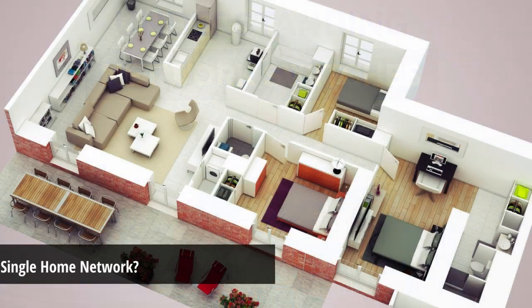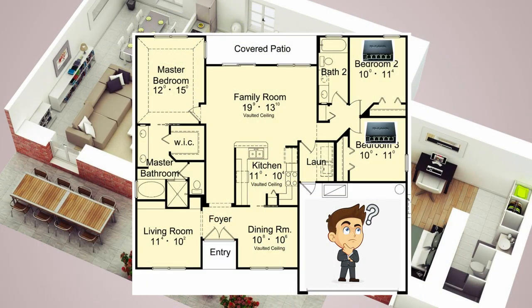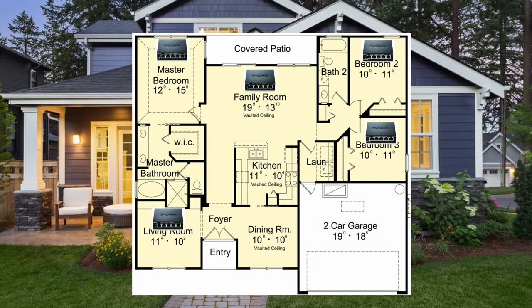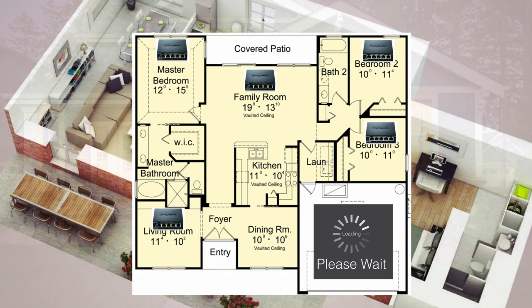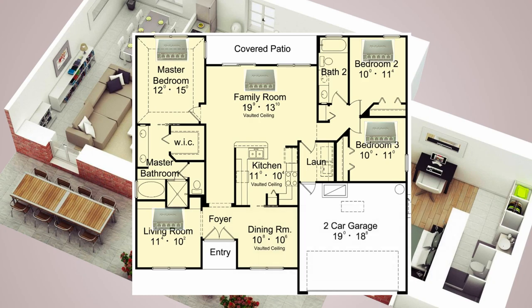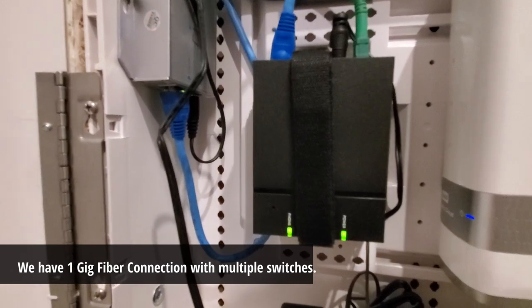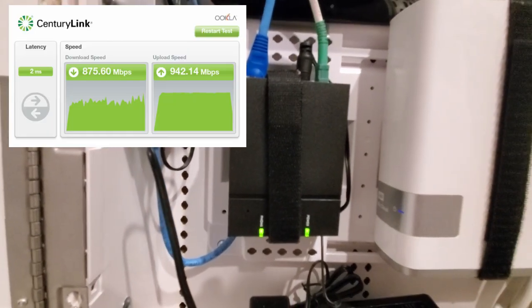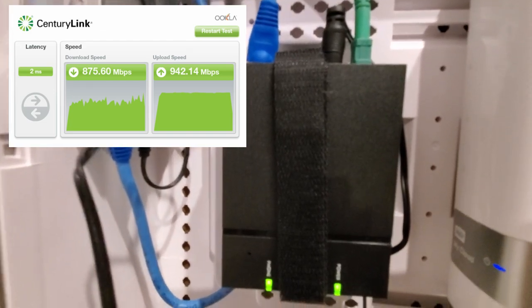Back to our original questions: how many switches should you have in your network? My best answer is one switch per room per ethernet cable. And do multiple switches slow down your network? Well, technically yes, however your switch most likely has a higher bandwidth than your internet connection, so you'll most likely see no difference in upload or download speeds. For example, I have a fiber connection with one-gig speeds and multiple switches throughout my house — one per room — and I've had no issue with bandwidth or speeds.